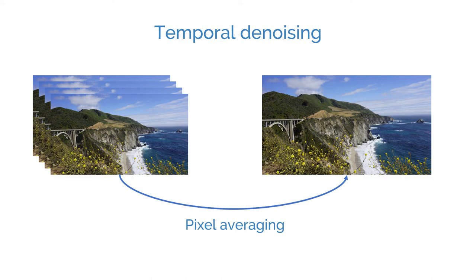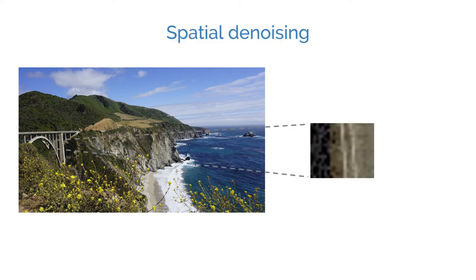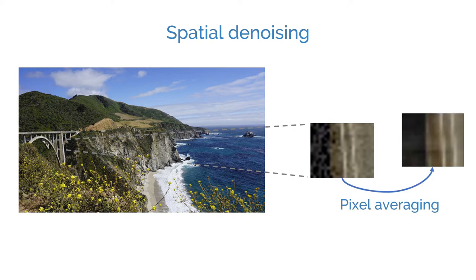Another approach is to average the pixels within a single frame according to some criteria, such as averaging similar neighboring pixels. This type of denoising is called spatial or single frame noise reduction. Spatial denoising algorithms can average pixels that are spatially close to each other, similar to each other, or aligned in image patches that are similar to each other.